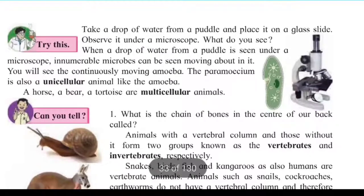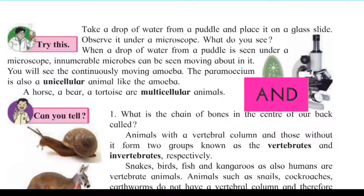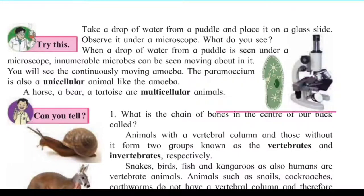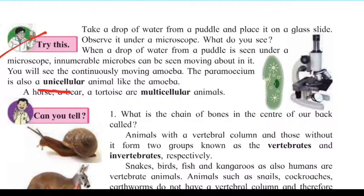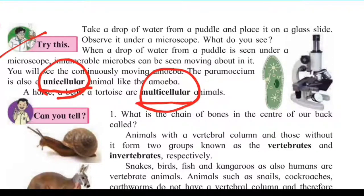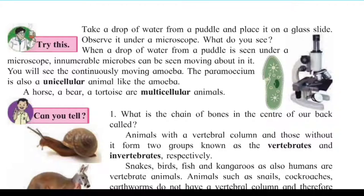The classification of animals based on cellular structure: animals are divided into two parts on the basis of their cellular structure. The first is unicellular animals, and the second is multicellular animals. Animals that have only one cell are called unicellular animals.